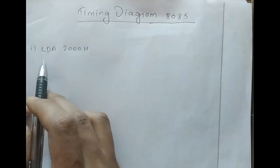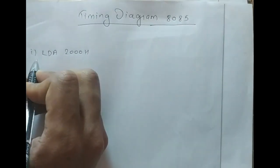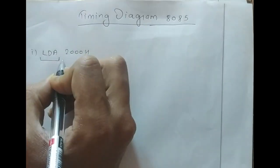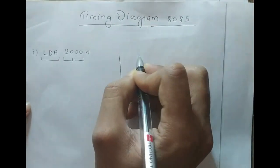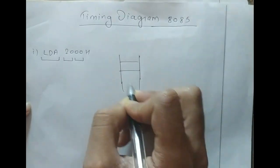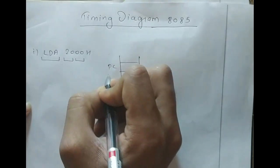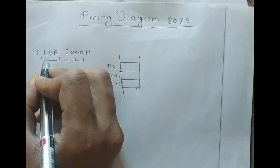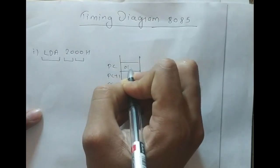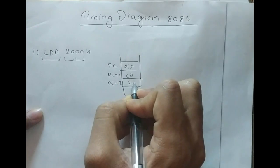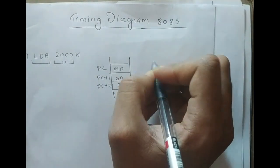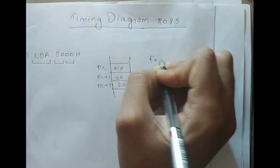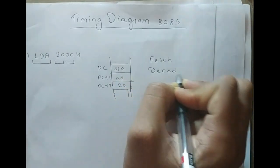First we should know how many bytes the instruction will cover. The opcode will cover one byte, and this two-part data will cover one byte each, so in total this instruction occupies three bytes. In memory, starting at the program counter (PC), PC+1, PC+2, it consists of the opcode of LDA, then 00, and then 20. The main task of the processor is fetch, decode, and execute.